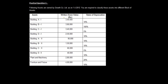Let's see one practical question on block of assets. The following assets are owned by Growth Company Limited as on 1st April 2012. You are required to classify these assets into different blocks of assets. The assets include buildings in various categories A, B, C, D, as well as plant and machinery, and furniture and fixture.